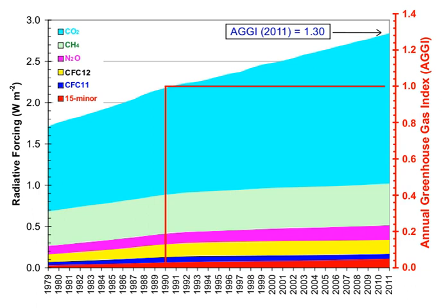Methane has an atmospheric lifetime of 12 ±3 years. The 2007 IPCC report lists the GWP as 72 over a time scale of 20 years, 25 over 100 years, and 7.6 over 500 years. A 2014 analysis states that although methane's initial impact is about 100 times greater than that of CO2, because of the shorter atmospheric lifetime, after six or seven decades the impact of the two gases is about equal, and from then on methane's relative role continues to decline. The decrease in GWP at longer times is because methane is degraded to water and CO2 through chemical reactions in the atmosphere.